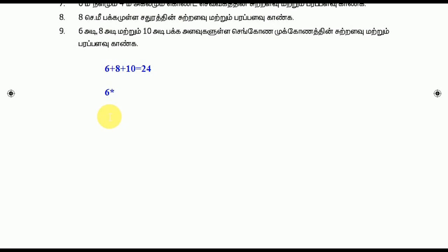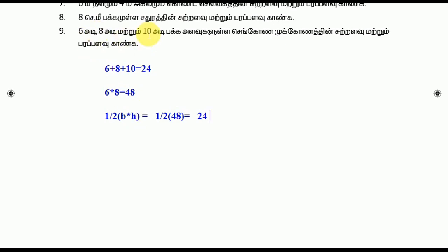6 plus 8 is 48. So b equals r and h equals 8, and the numbers are 48. So 1/2 equals b and h. So 1/2 — if we divide it, 24 plus 8 is 24. So this is the easiest way to do this.